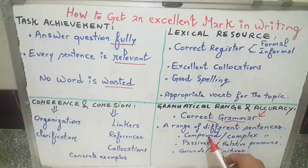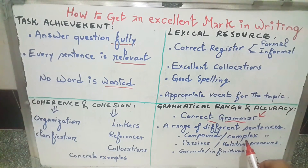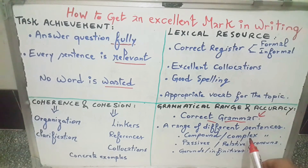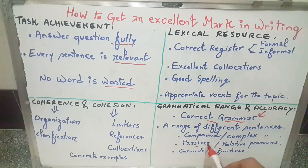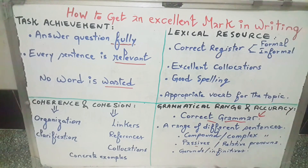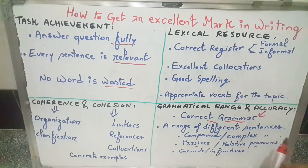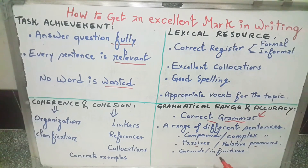Compound sentences have two independent clauses; complex sentences have one dependent and one independent clause. Try to use passives in their different forms, use relative pronouns to connect your clauses, and try to use participles and infinitives that you have studied before.